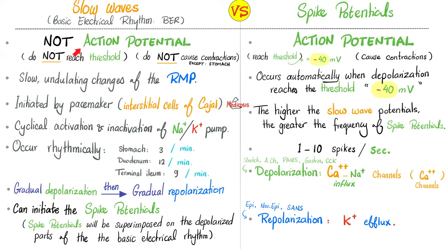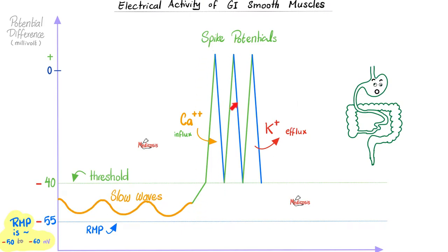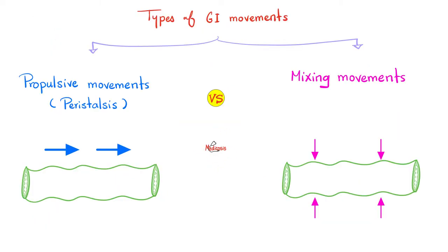That's why we have the slow waves. These are not true action potentials — they are just small waves humming and buzzing in the background. On top of that, there is the foreground: spike potentials, true action potentials leading to true contractions. Contract the smooth muscles — hashtag motility. Contract the acinus — hashtag secretions. Here are the slow waves, and then boom — the actual action potential, known as spike potential. Thank you calcium influx for depolarization, and thanks to potassium efflux for repolarization. Your digestive system is all about digestion and absorption by means of motility and secretions.